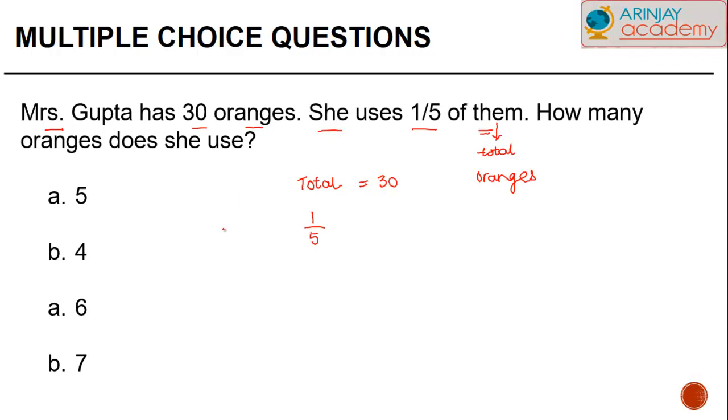How many oranges does she use? She used one-fifth of oranges. Or in other words, one-fifth of how many oranges were there? There were a total of 30 oranges.